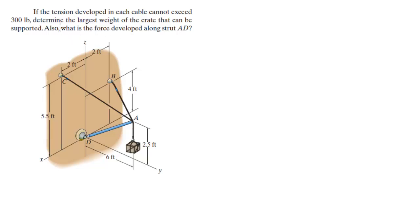Let's do this problem: if the tension in each cable cannot exceed 300 pounds, find the largest weight of the crate that can be supported. We have three cables — AB, AC, and the cable going straight down holding the crate — and a rod AD that we also need to find. The unit vector for AD will be going in this direction.